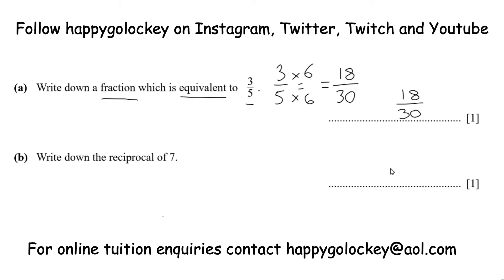Part B: write down the reciprocal of 7. A lot of students say they can't remember what reciprocal means, so this is quite an important one. If you tell your partner 'I love you', you expect them to reciprocate and return the favour and say 'I love you too'. So the reciprocal of something is to get back to where you started — it's asking what do we have to do to 7 to get back to 1. There's a formula you can use for reciprocals that will help you remember.